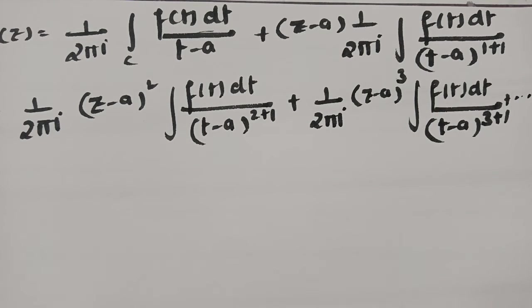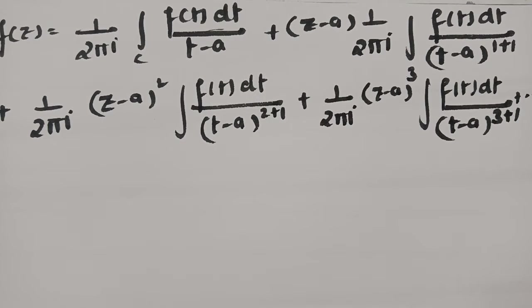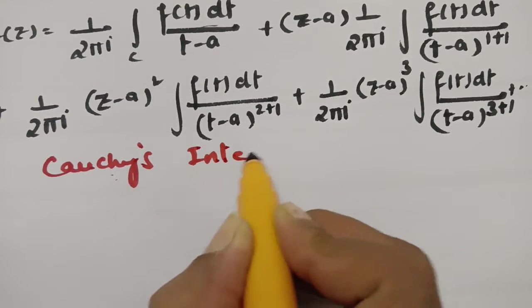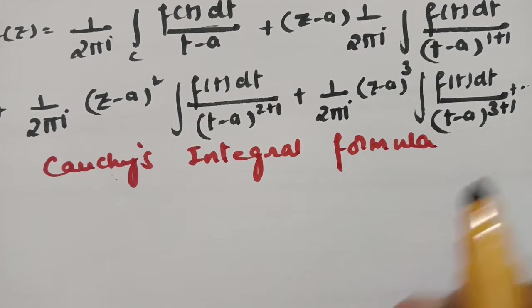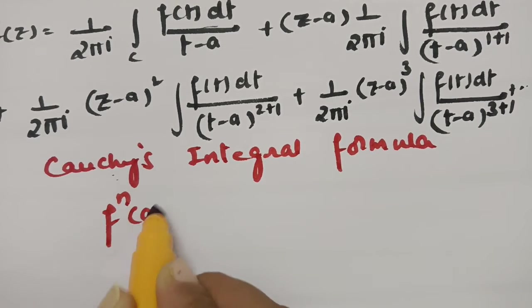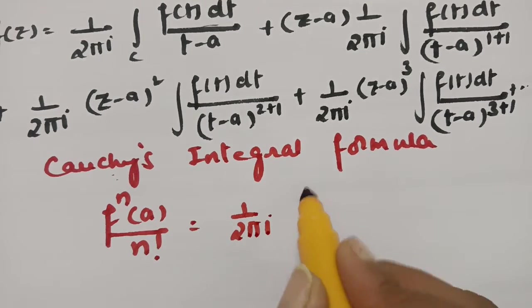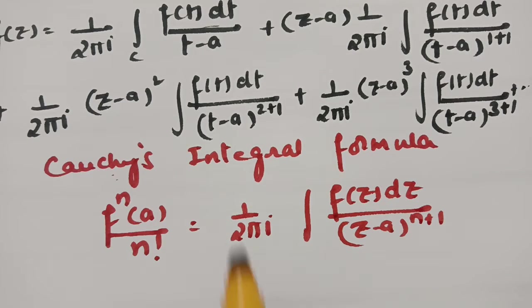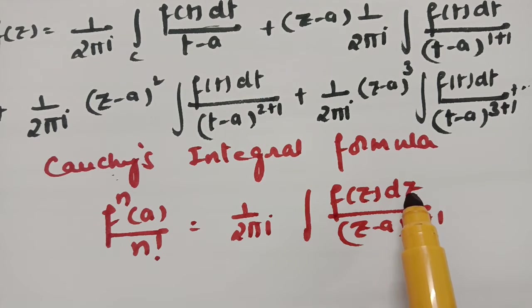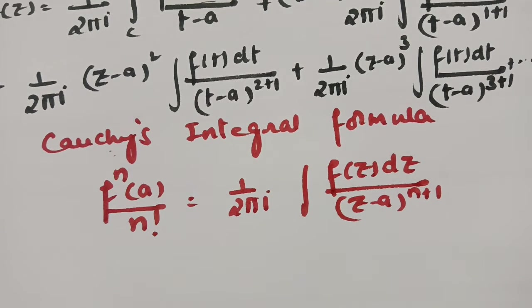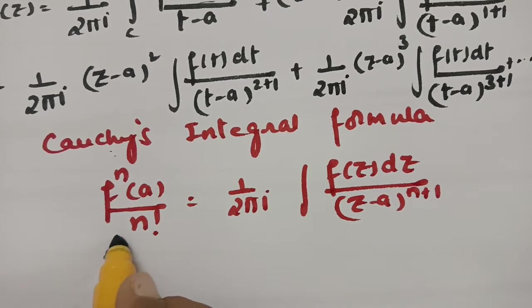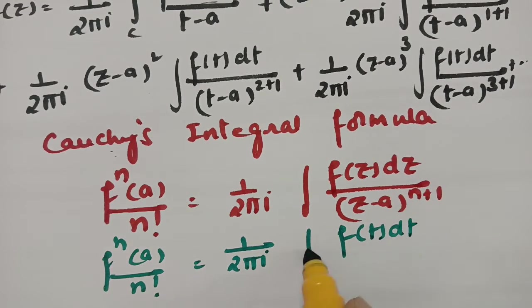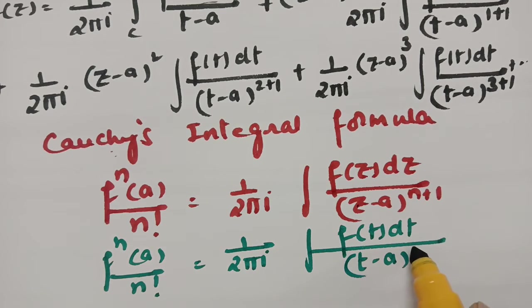Now I am going to use Cauchy's integral formula for the nth derivative: f to the power n of a by n factorial equals 1 by 2 pi i, integral c, f of z dz by z minus a power n plus 1. Since we have t here instead of z, I am replacing z by t to get: f to the power n of a by n factorial equals 1 by 2 pi i integral c f of t dt by t minus a power n plus 1.